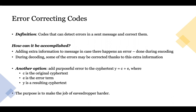Another option is you can add some random purposeful error to the ciphertext, where Y is what we send. It's composed of C, which is our original ciphertext, added to E, which is our error term. The purpose is to make the job of an eavesdropper harder and to make sure that the code cannot be easily recovered and modified.